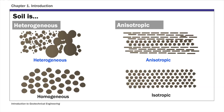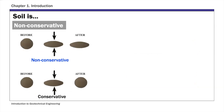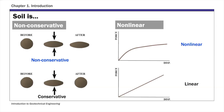Soil is also non-conservative, which means the behavior of soil is history dependent. If you unload a soil, it's not going to rebound to its initial state. And finally, soil behavior is highly non-linear. In addition to these unique and complex characteristics of soil, what makes the geotechnical field unique is that engineers deal with much greater uncertainty.